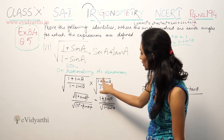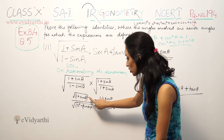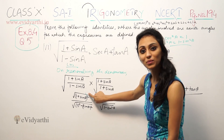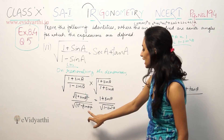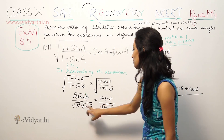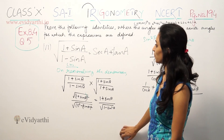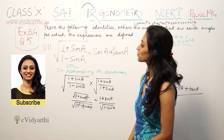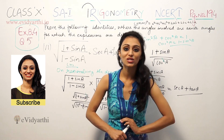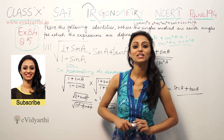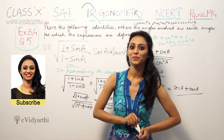Rationalizing means individual terms will not be able to cancel and the square root will never cancel when it is closed. So this is your question 6th part — do watch the next video for the next part of this question. Goodbye.